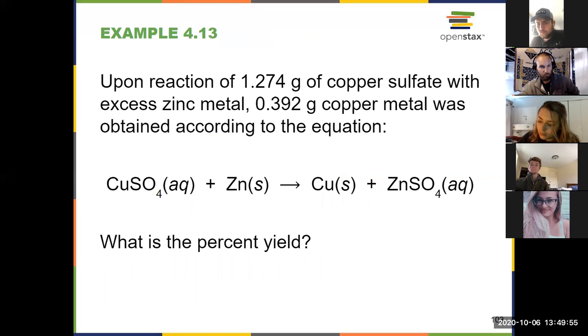So we finish with an example. Upon reaction, this is 4.13 from the textbook. Upon reaction of 1.274 grams of copper sulfate with excess zinc metal, I make 0.392 grams of copper metal, and then I'm given a chemical equation and asked to find the percent yield. So the very first thing that you want to get in the habit of checking is, is the reaction balanced? Just drill that into your mind for the rest of my course at LEAPS and any other chemistry course you take. Every time you see a chemical reaction, just quickly check, is it balanced? So I've got one copper, one copper, one zinc, one zinc, one sulfur, one sulfur, four oxygens, four oxygens. Everything's good in this case, but especially on tests and homework, make sure that you have a balanced reaction.